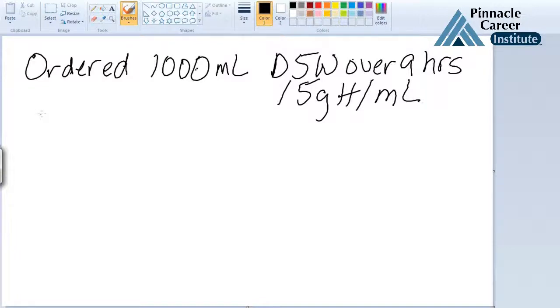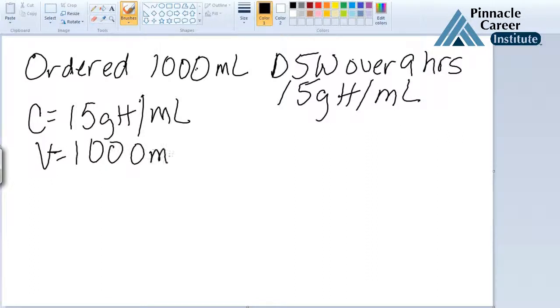So we have our tubing, which is 15 gtt per mL. We have our volume, which is 1,000 milliliters. We have our time, which is 9 hours. Remember, for this, you need to convert this to minutes. So this is going to be 540 minutes.